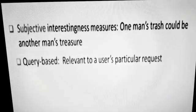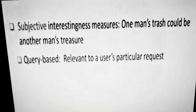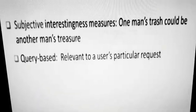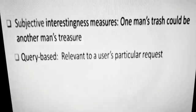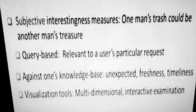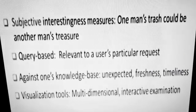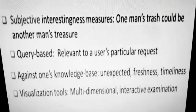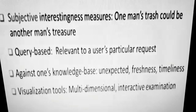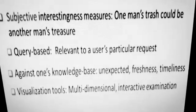There are different subtypes of subjective interestingness. The first is query-based — depending on the criteria, queries generate patterns relevant to the user's particular request. Another type is against a knowledge base — depending on the user's knowledge base, we can have certain rules that may be unexpected, new, or time-dependent. The third category is visualization tools, which are multi-dimensional and interactive. These are all subjective, depending on the user's choice.